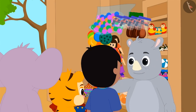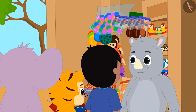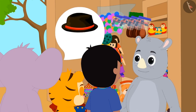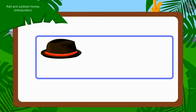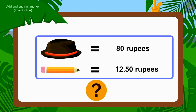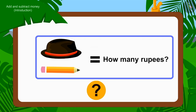All three friends have come to Gaggoo's toy store. They have to buy a hat and a pencil. The cap is Rs. 80 and the pencil is Rs. 12.50. Children, can you tell how much money will they have to pay to buy the gift?